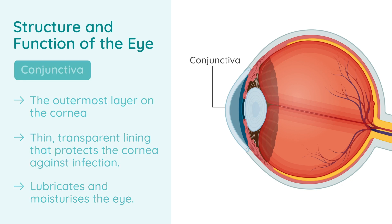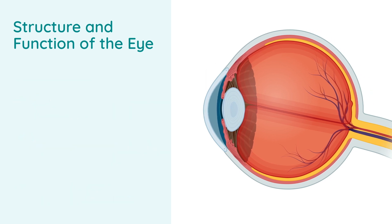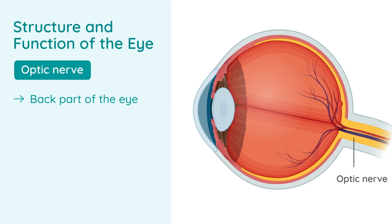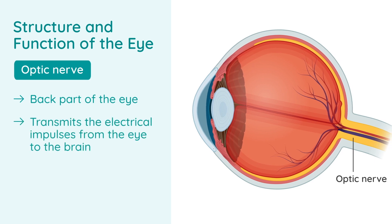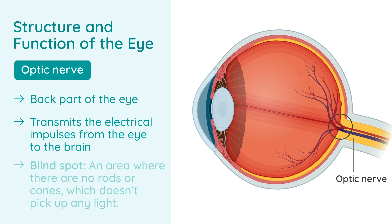At the back part of the eye, there is the optic nerve. The job of the optic nerve is to transmit the electrical impulses from the eye to the brain. Where the optic nerve leaves the eye, there won't be any retina, and this leads to what's called the blind spot — an area where there are no rods or cones and it doesn't pick up any light because the optic nerve is leaving the retina at that point.